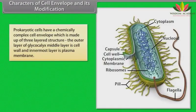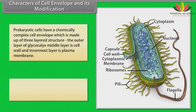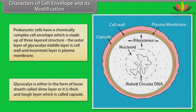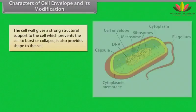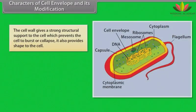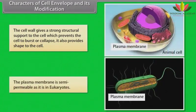Prokaryotic cells have a chemically complex cell envelope, which is made up of a three-layered structure: the outer layer of glycocalyx, middle layer is cell wall, and the innermost layer is plasma membrane. Glycocalyx is either in the form of a loose sheath called slime layer, or it is a thick and tough layer called capsule. The cell wall gives strong structural support to the cell, preventing it from bursting or collapsing, and also provides shape. The plasma membrane is semi-permeable, as it is in eukaryotes.